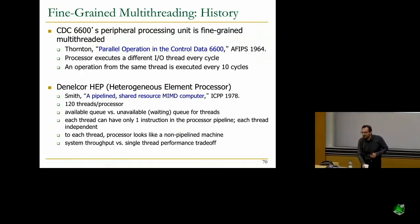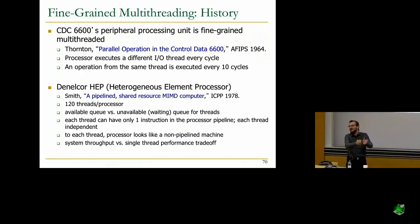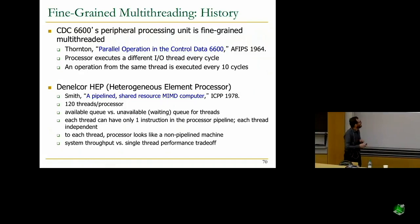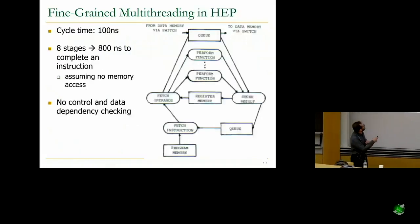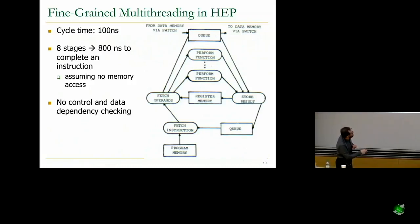A student asks: how can you ensure isolation — that one thread doesn't access registers from another? There are separate register files. If you're fetching from thread zero, you go to the register file for thread zero. That's the hardware cost. The cycle time was 100 nanoseconds with eight pipeline stages — 800 nanoseconds to complete an instruction assuming no memory access. You fetch an instruction, put it in a queue, fetch from a different thread every cycle.